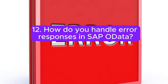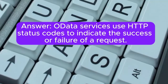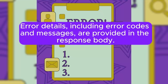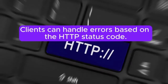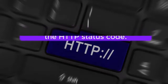Question 12: How do you handle error responses in SAP OData? OData services use HTTP status codes to indicate the success or failure of a request. Error details, including error codes and messages, are provided in the response body. Clients can handle errors based on the HTTP status code.